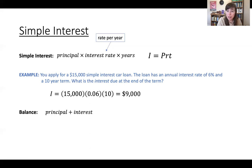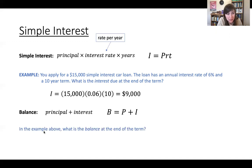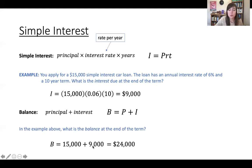Now let's calculate the balance after 10 years. That is the principal — the original amount you borrowed — plus the interest. Using the balance formula, balance equals P plus I: that is 15,000 plus 9,000, which is $24,000.